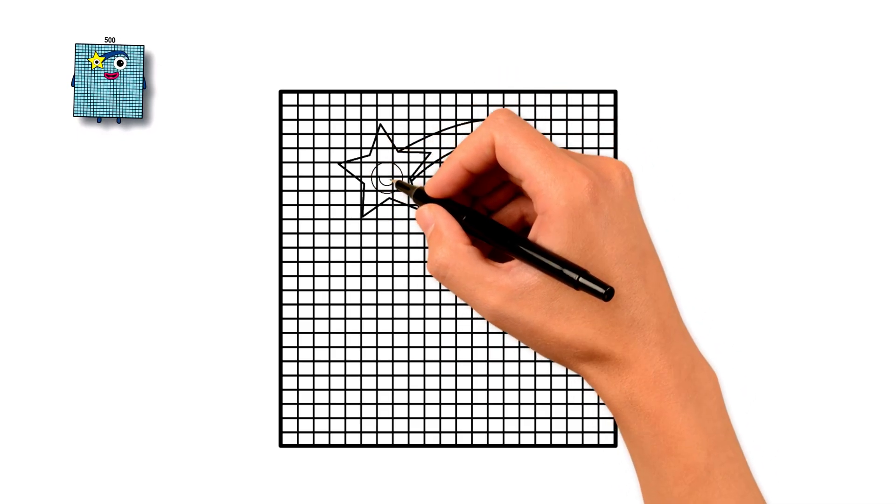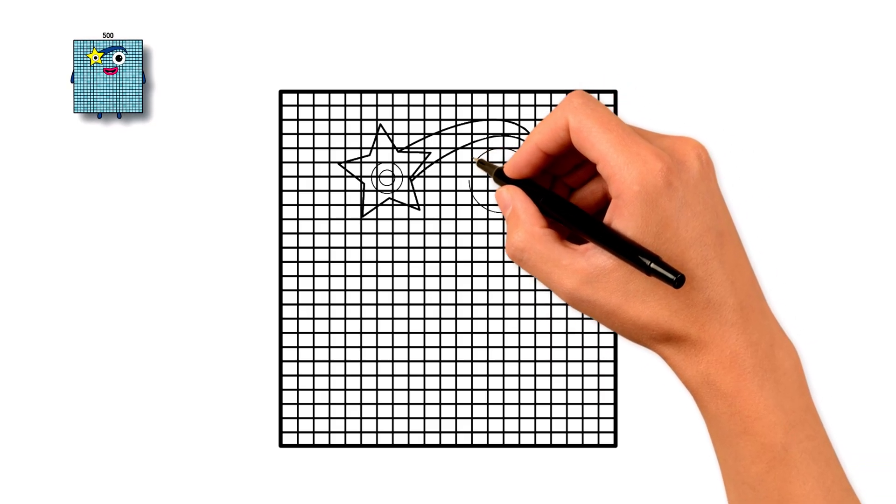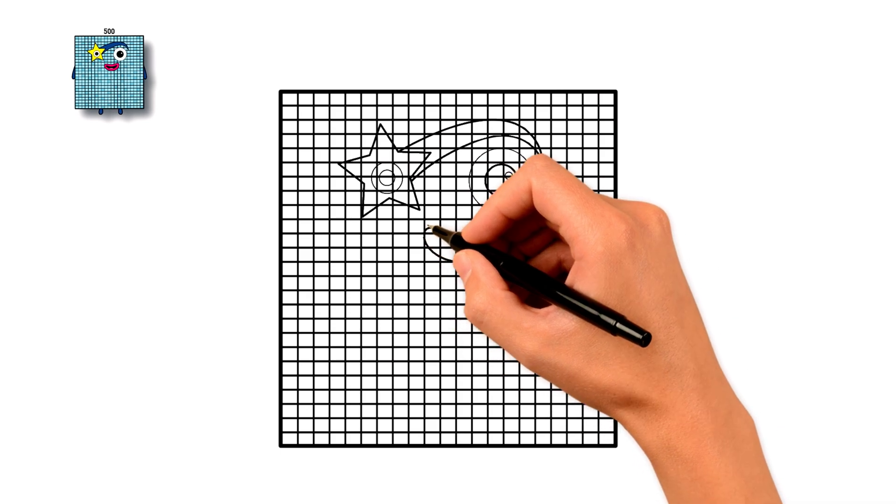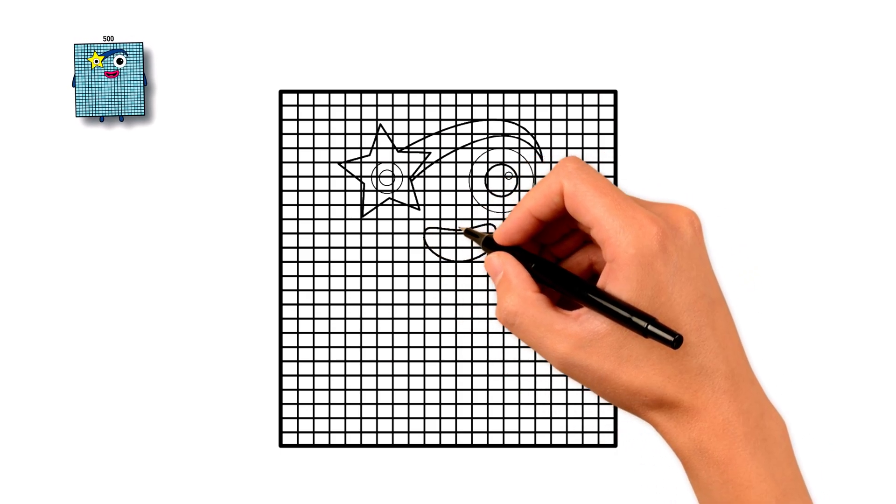Inside the star, add one big round eye. On the other side of his body, draw his second eye. Then, below the eyes, draw his big happy mouth. Don't forget the tongue inside.